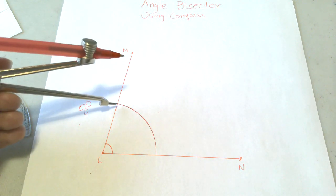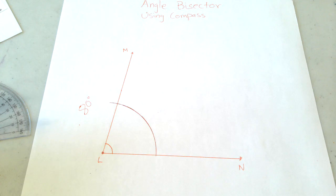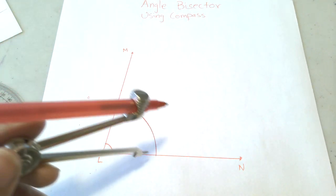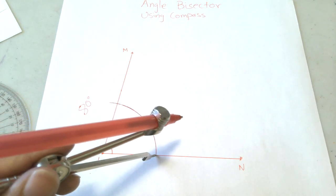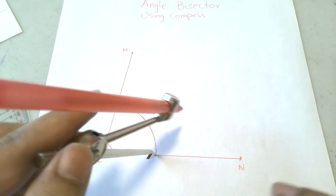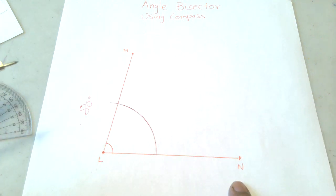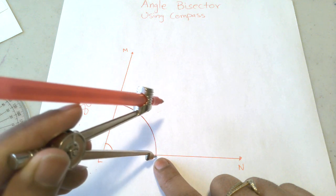Now your next job is to place your pointer on each point where the arc lands on the lines, on line NL and LN. Put your pointer over here on this point.